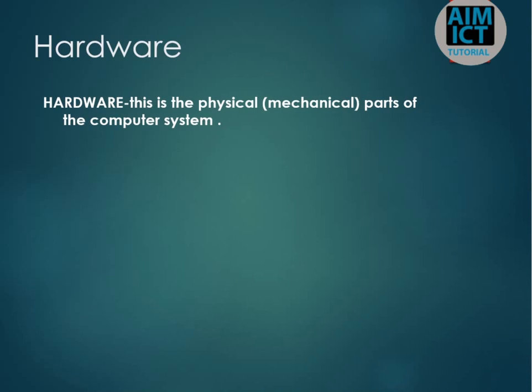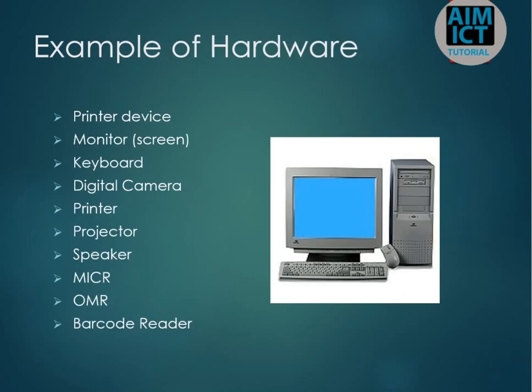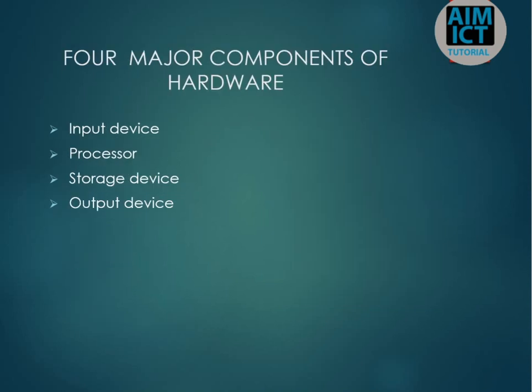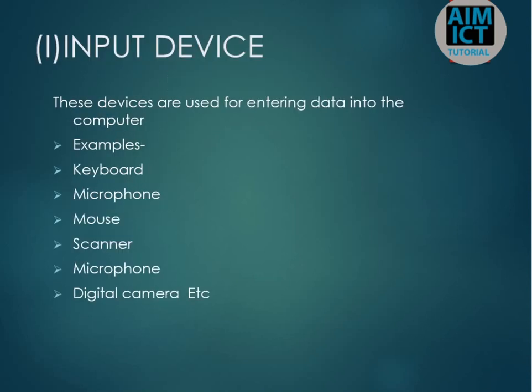Software, on the other hand, is not touchable. Examples of hardware include the printer and other devices. The major categories of hardware are: input device, processor, storage device, and output device.